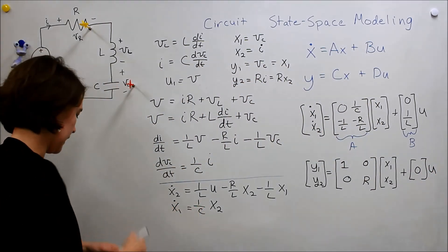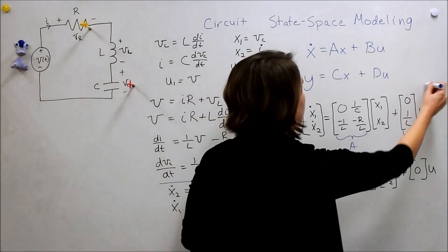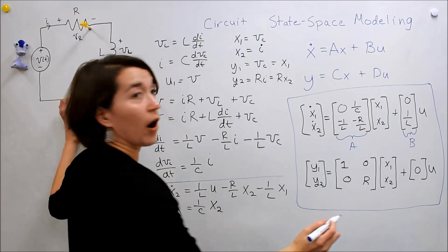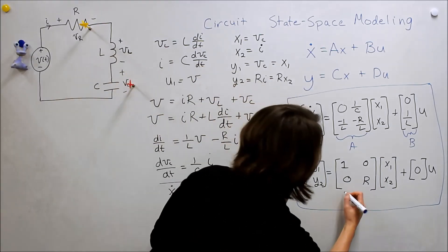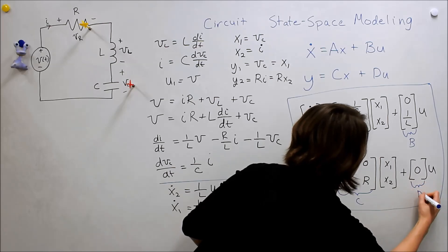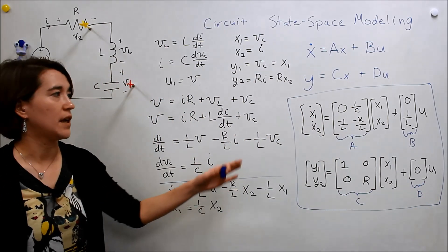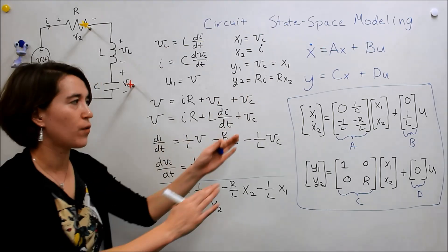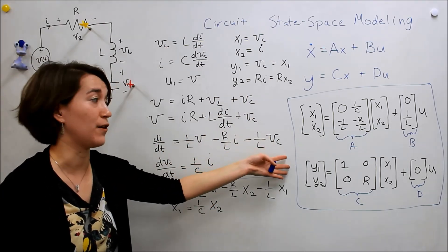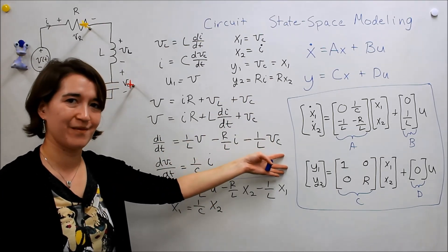So this would be the state space modeling of our RLC system here, and this is C and D. So now we've fully modeled it in state space, and we could go forward with doing some analysis on it, but for now we're just modeling, so this would be the final form.